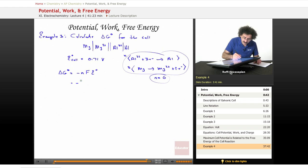So this is going to be minus 6 moles. Actually, I'm going to write out the units: minus 6 moles times 96,485 coulombs per mole times 0.71 joules per coulomb.